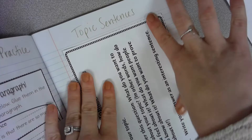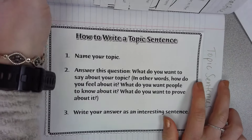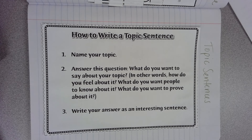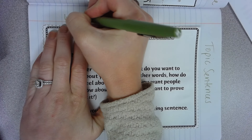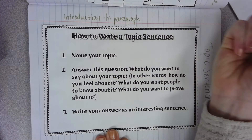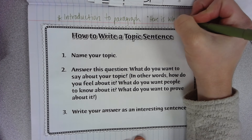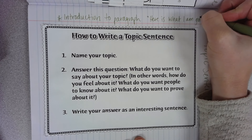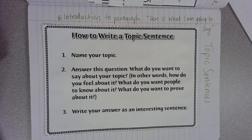I'm going to put mine like this — you can have it facing the other way as well if you want. So, topic sentences: how to write a topic sentence. First of all, topic sentences are like an introduction to your paragraph. I'm going to write up here: introduction to paragraph. It tells you here is what I am going to say. The first sentence of the paragraph gives you a little glimpse of what the paragraph is going to be about, or just a little summary of the main idea.